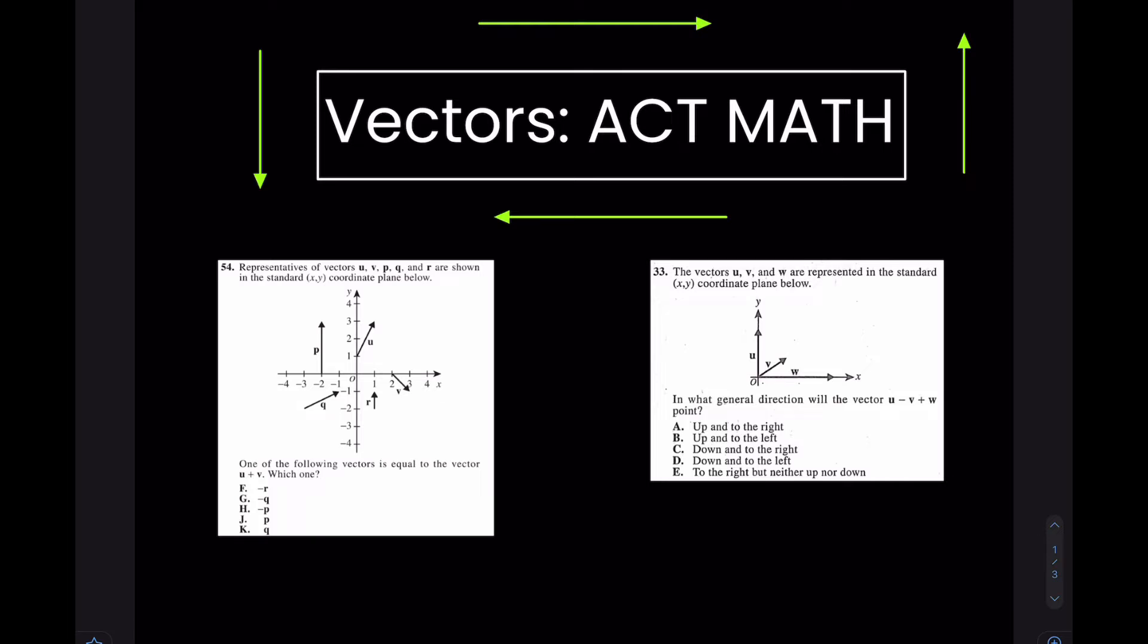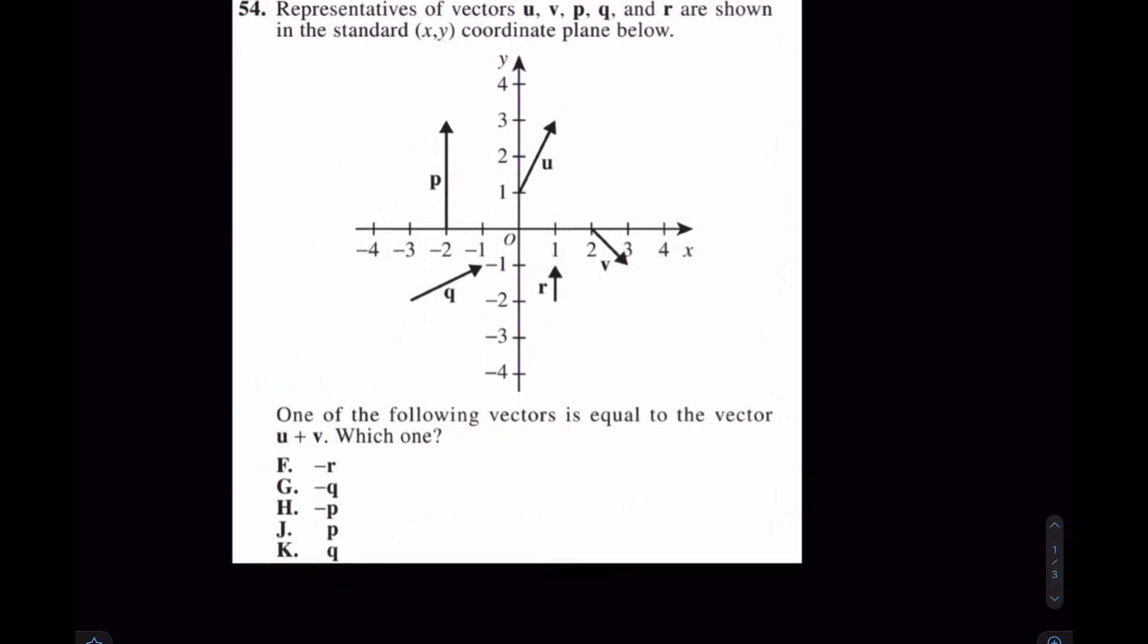First of all, the best way to teach this is just to jump into some questions. Why not try with number 54 over here? This one says if I added the vectors u plus v. Remember, we don't really want to read all of this up there. Just do the math, right? So it says one of these is equal to the vector u plus v. If that's the case, please watch.